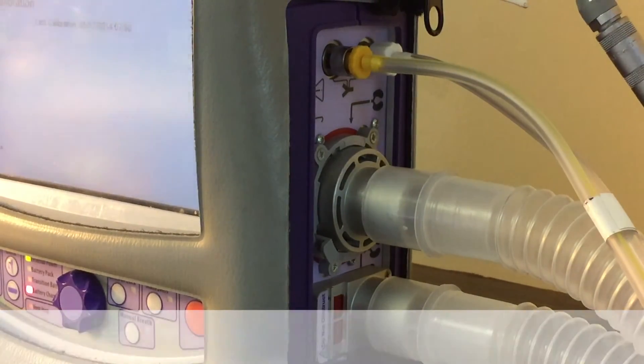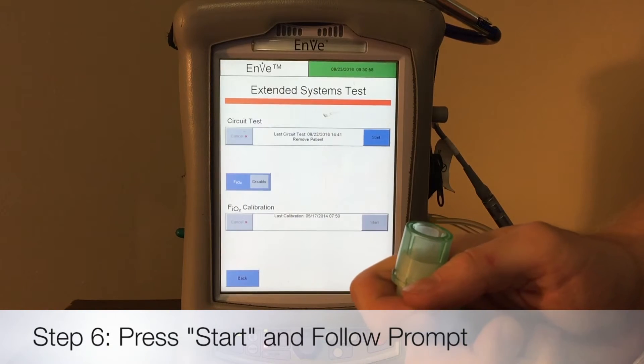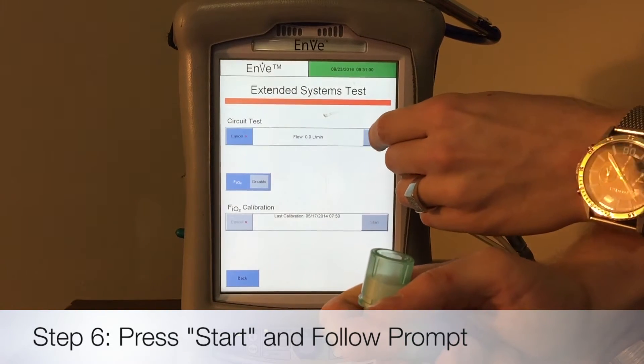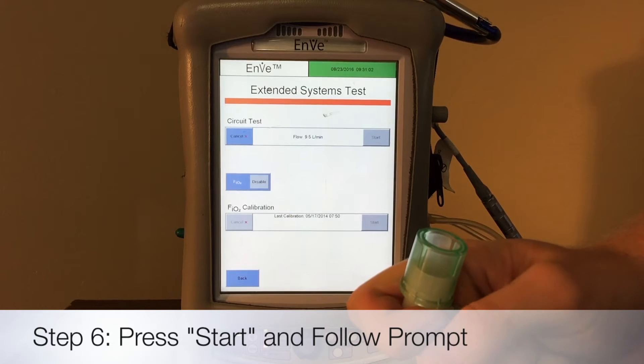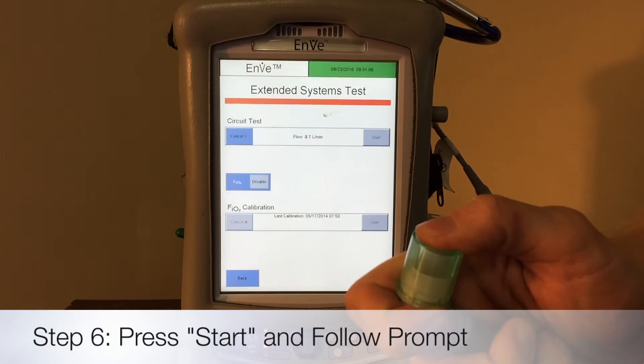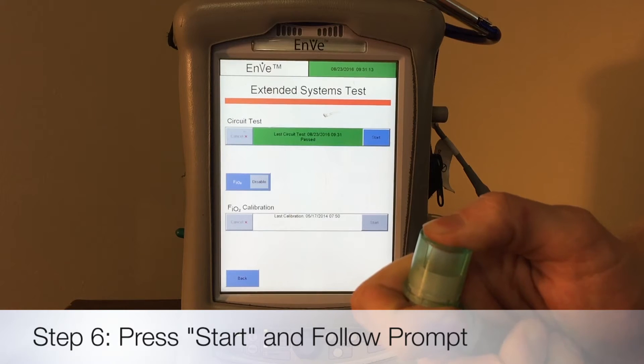So now that it's tightened and attached, you can go back to that screen. You'll notice the countdown is done and be ready to occlude it. So we hit start and the vent ramps up. You can hear the blower going and then we occlude it and then it's going to pressurize the circuit and look for any leaks. So we keep our finger on there and it has passed.